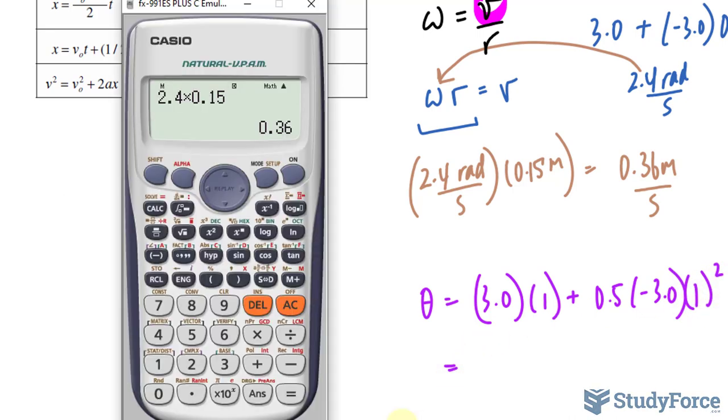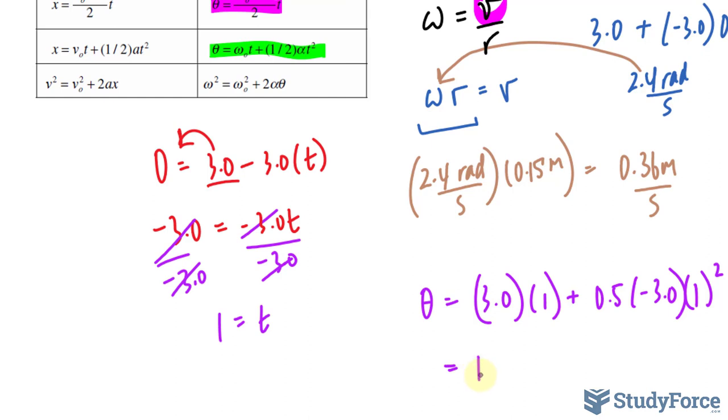Alright, let's go ahead and do this. 3 plus 0.5 times negative 3.0, times 1 to the power of 2, which is 1, and you end up with 1.5 radians. You can easily convert that into degrees if you want to get a better idea of what that looks like.